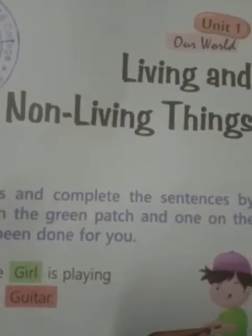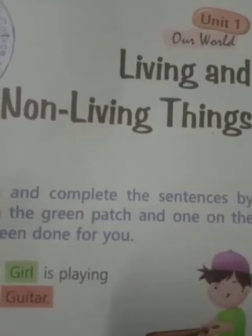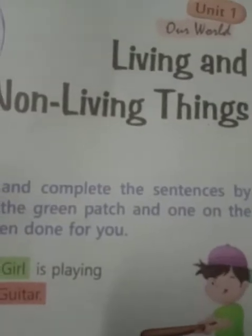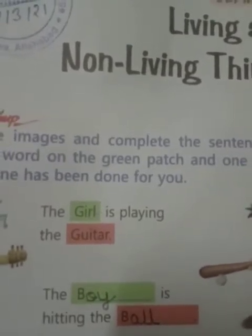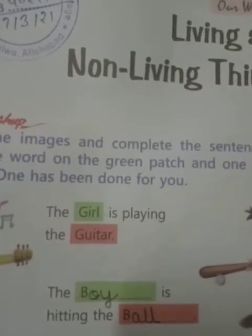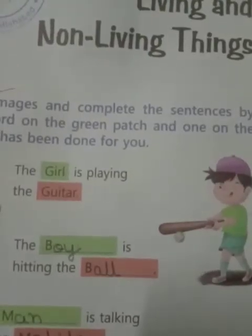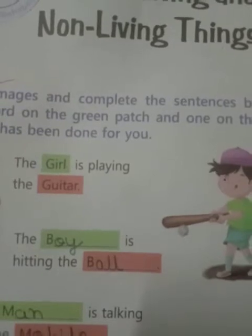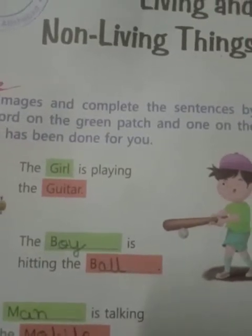Students, before starting today's topic, I will explain the lesson to you once more in short. Living things are things that move on their own, grow, breathe, need food, feel, and reproduce. Non-living things are things that do not move, grow, breathe, need food, feel, or reproduce.